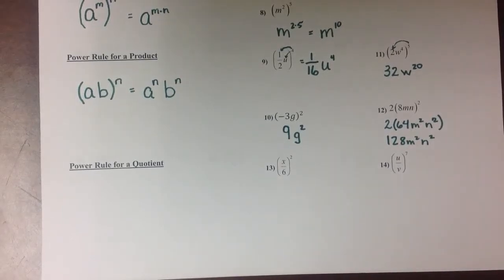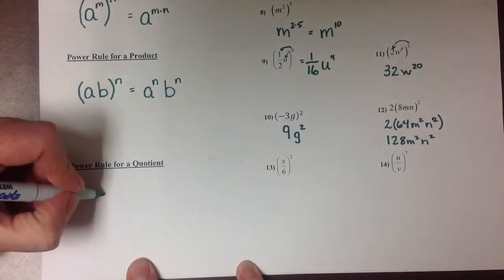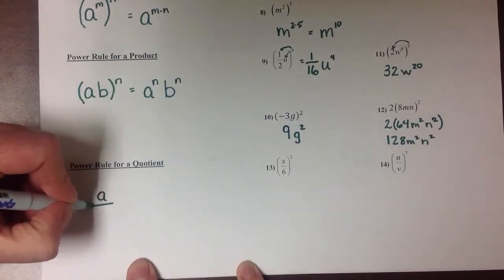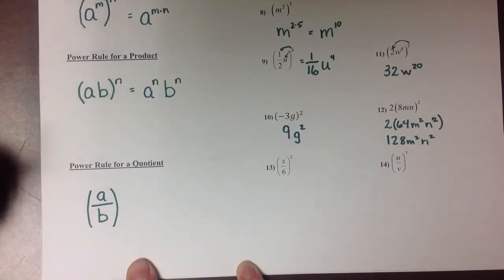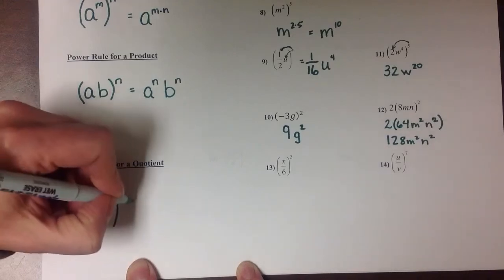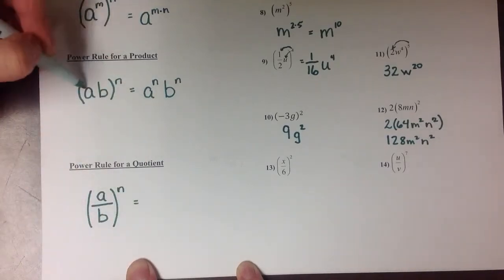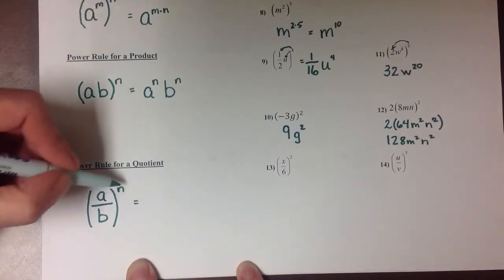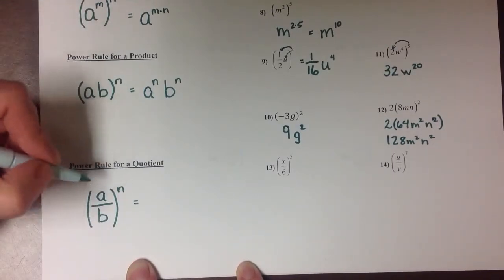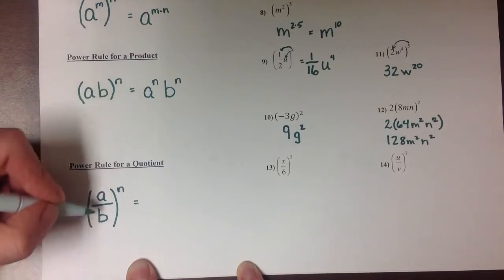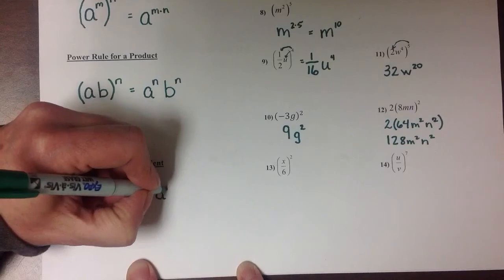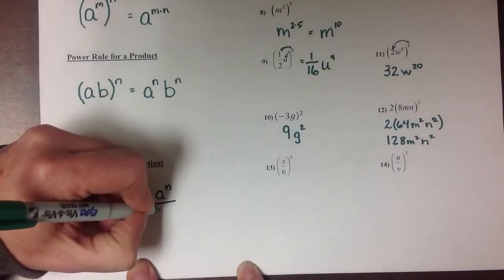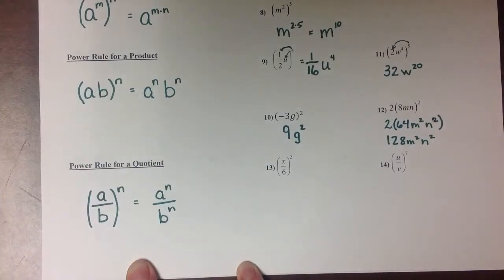Our last power rule in section 5.1a is the power rule for a quotient. This one says if you have two real numbers being divided by each other, because that's what a quotient is, that are raised to a power, just like the power distributed onto each of the factors in our product, it's going to distribute onto both the divisor and the dividend in our fraction here. So that's equal to a to the n over b to the n.